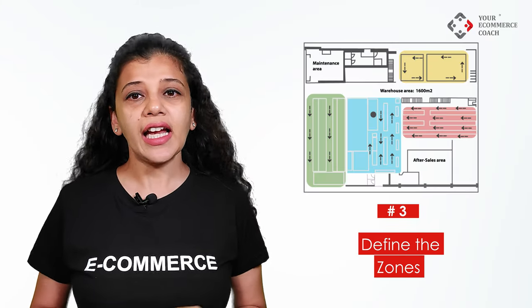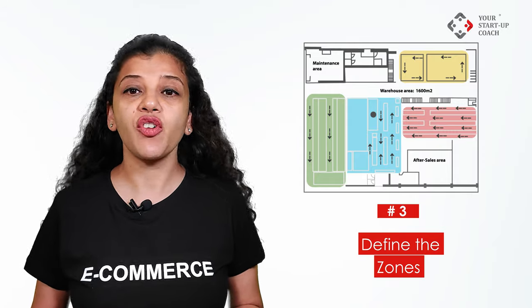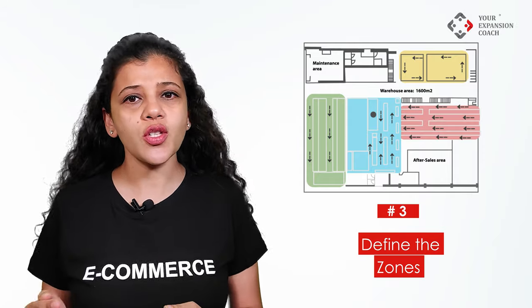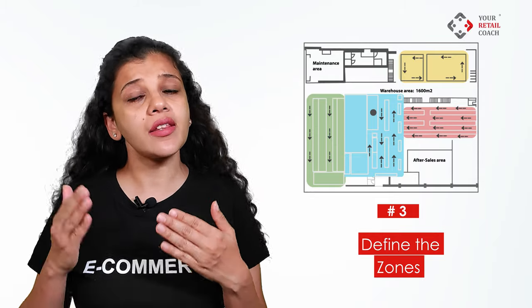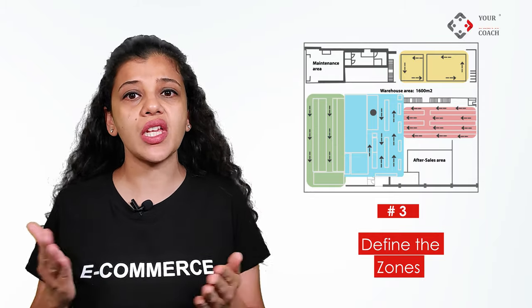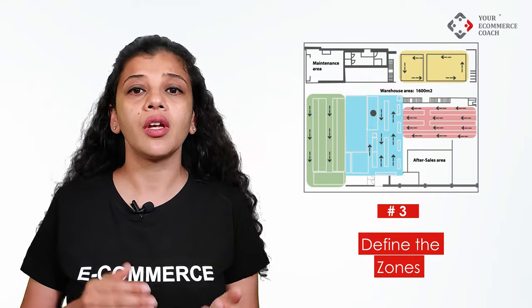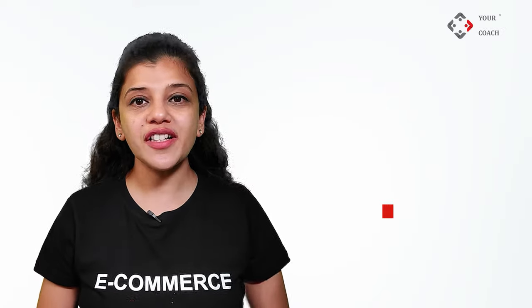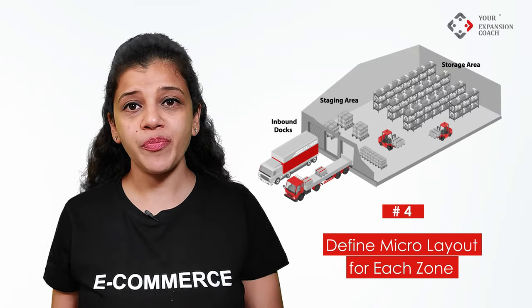Step three: define the zones. The next step is to define the various zones on the layout to understand the space availability for each activity within the warehouse. For example, orange zone for the inward area, blue zone for the goods storage area — this can be further divided into more zones if there is a requirement for cold storage or ambient storage — yellow zone for utility areas, and green zone for the outward area.